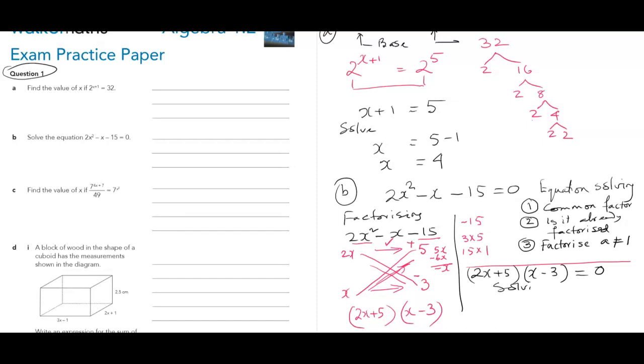And solving it. That will give you 2x plus 5 equals to 0. So x should be equal to minus 5 over 2. Or x equals 3. So these are the two solutions. x equals negative 5 over 2, x equals 3.